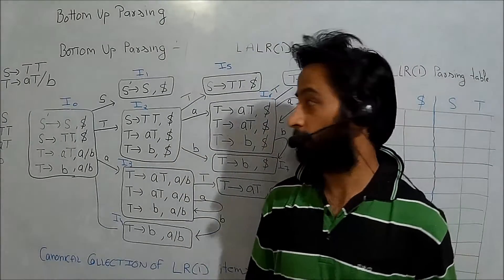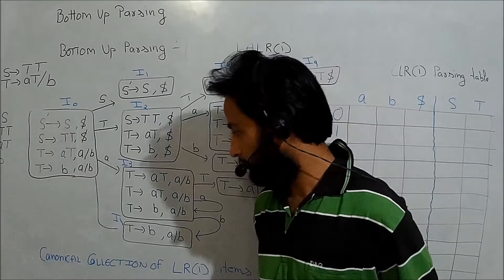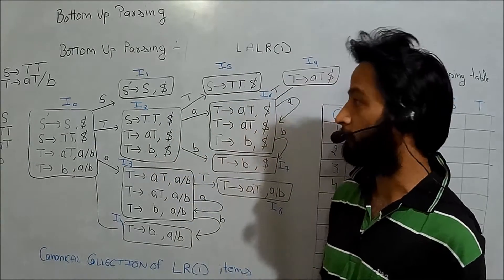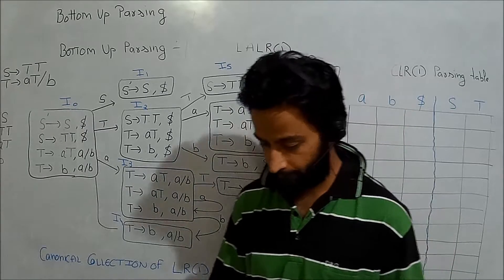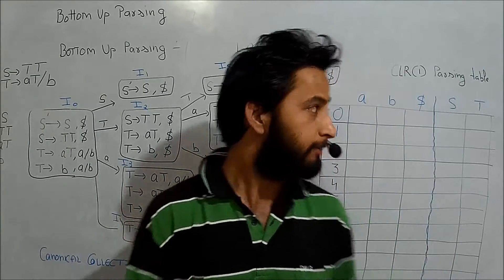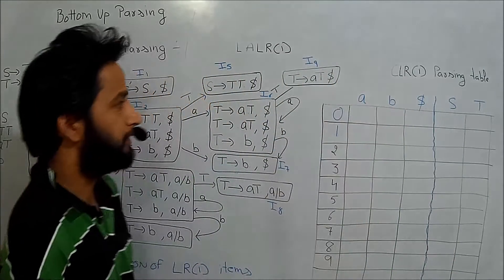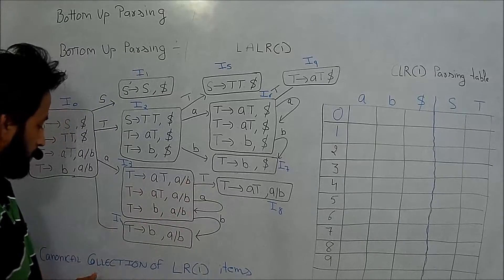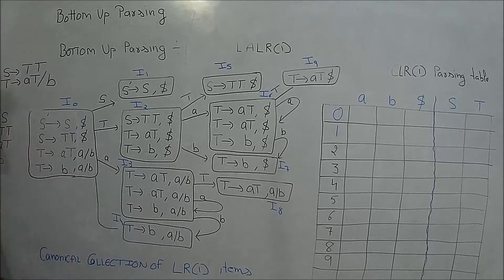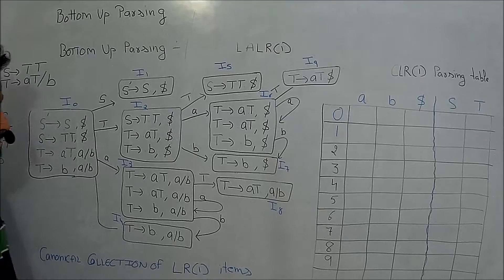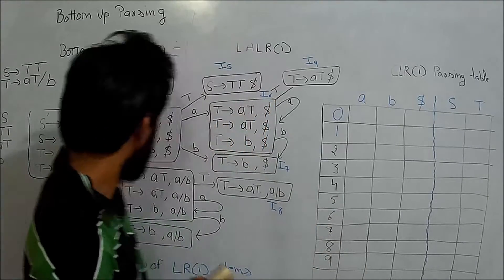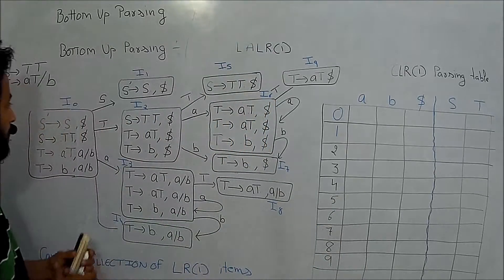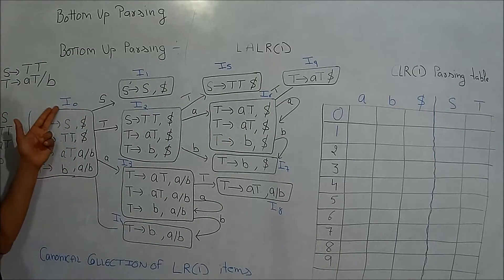In the previous lecture we designed the canonical collection of LR1 items for the given grammar. Now we will design the CLR1 parsing table for that canonical collection. For designing the CLR1 parsing table, we need the state numbering I have assigned: i0, i1, i2, i3, i4, i5, i6, i7, i8, and i9.